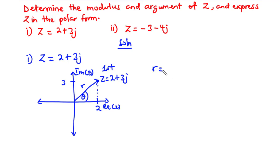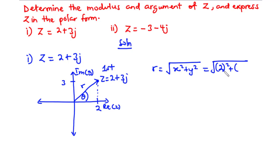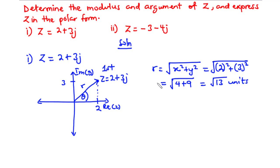To find r, we use r equals the square root of x squared plus y squared. With x equal to 2 and y equal to 3, this gives the square root of 2 squared plus 3 squared, which is the square root of 4 plus 9, equal to the square root of 13 units.